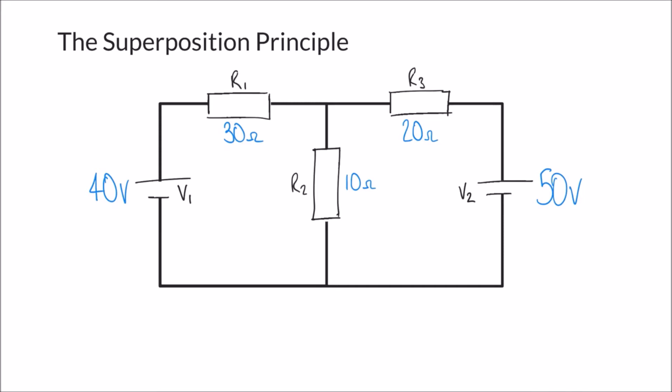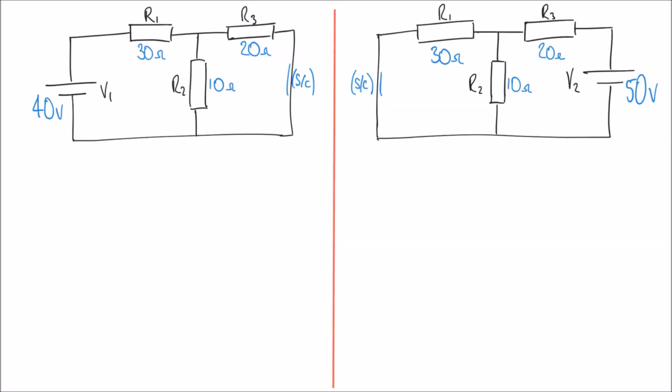One of the things we can do to solve a question like this is to use the superposition principle. In this example we'll go through how we can apply it to solve a circuit like this. What I want to do is work out the current in each of the three resistors R1, R2, and R3, and also calculate the power dissipated in each of those resistors. The superposition principle involves making things simpler by dealing with the problem one half at a time.